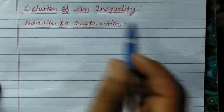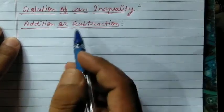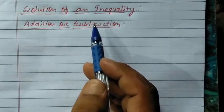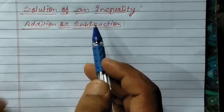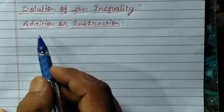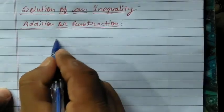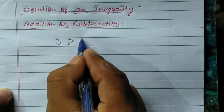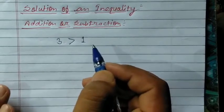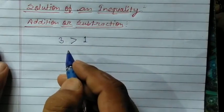Now, solution of an Inequality — how do we solve a Linear Inequality? The method to solve a Linear Inequality is the same as solving a Linear Equation in one variable. But here there are some things you need to keep in mind. First: addition or subtraction. In addition or subtraction, the same cases apply. Suppose 3 is greater than 1. If the same number is added or subtracted on both sides, then the inequality does not change.